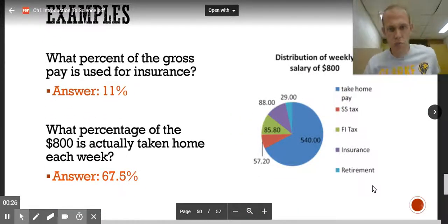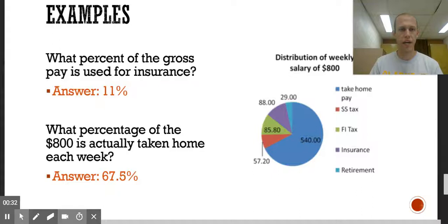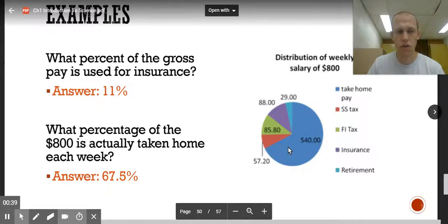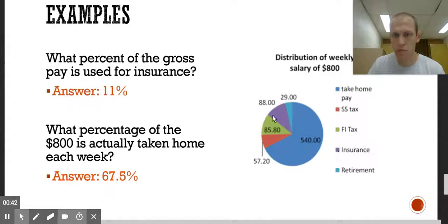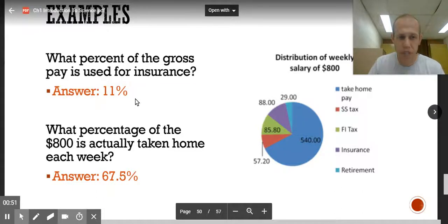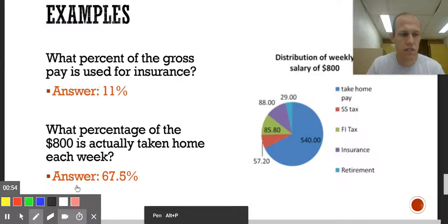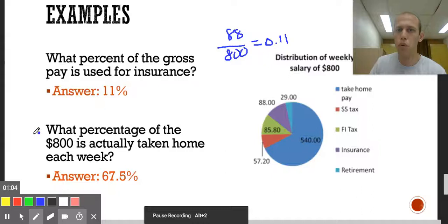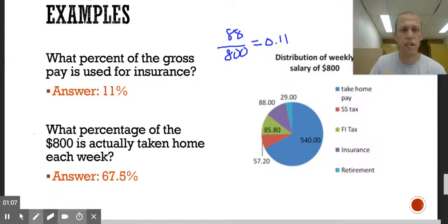Let's just look at some examples on how to interpret these graphs. So here's a pie chart. We want to know what percent of the gross pay is used for insurance. First, we have to look at our pie chart and look for insurance. So insurance is purple, that's 88. But how much is the total? It says out of a salary of 800. So how much is a percent? Remember, a percent is a part out of a whole. So I have to take the 88 divided by 800. I get 0.11, which as a percent is 11 percent.